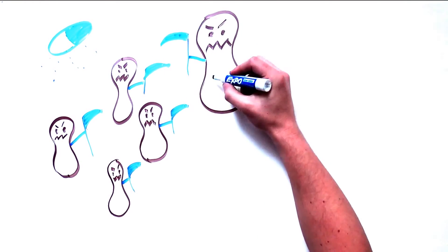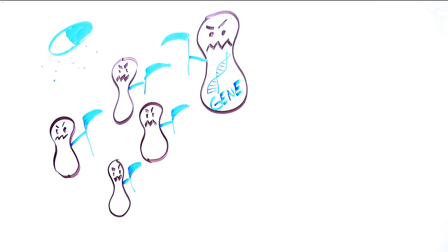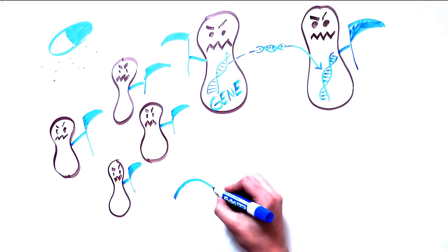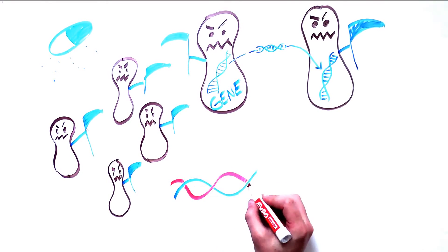But how this resistance spread surprised everyone. Scientists discovered that the genes causing antibiotic resistance can be transferred from one bacteria to another. And some genes can even confer resistance to multiple antibiotics.